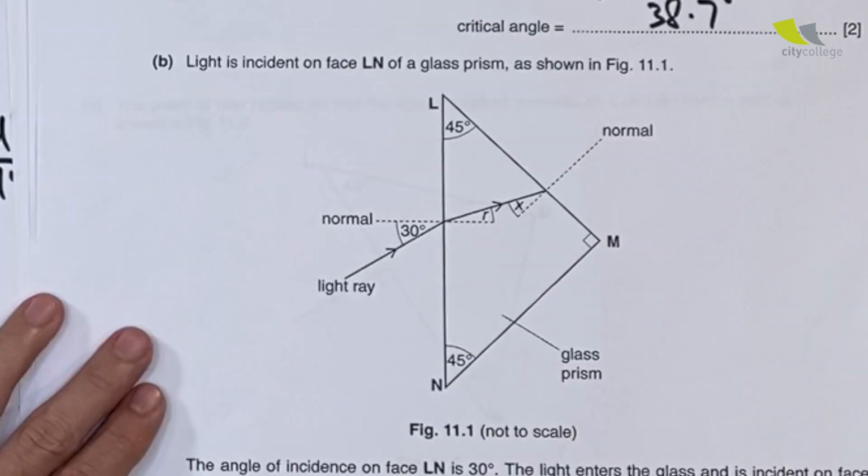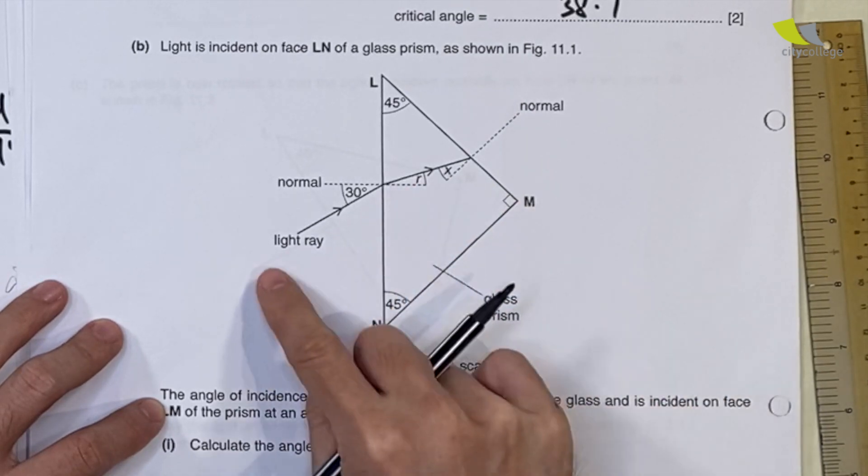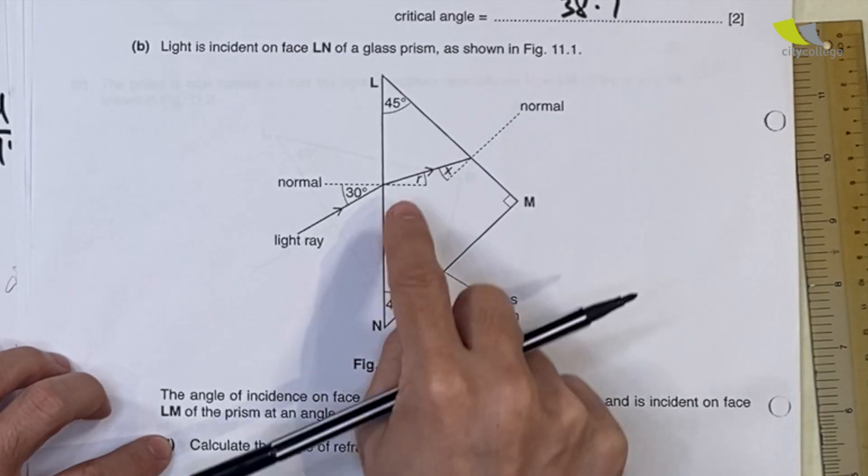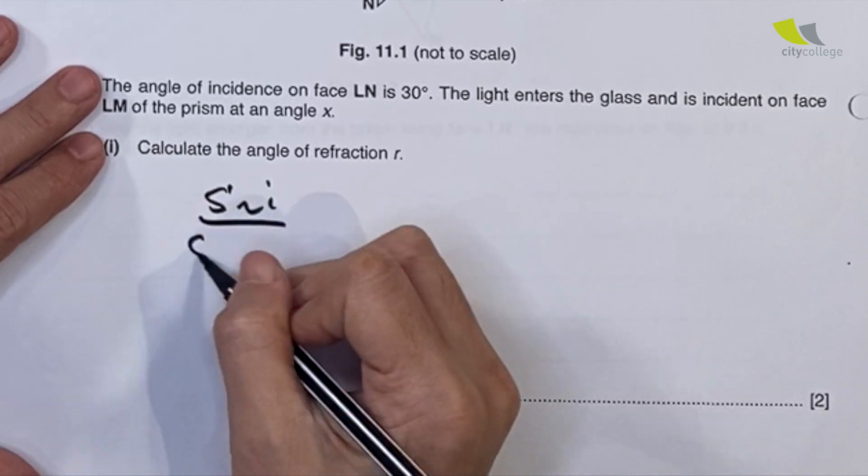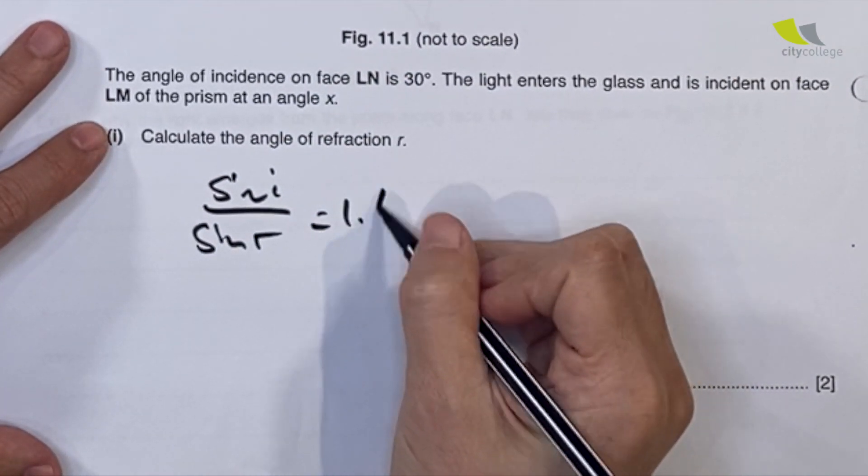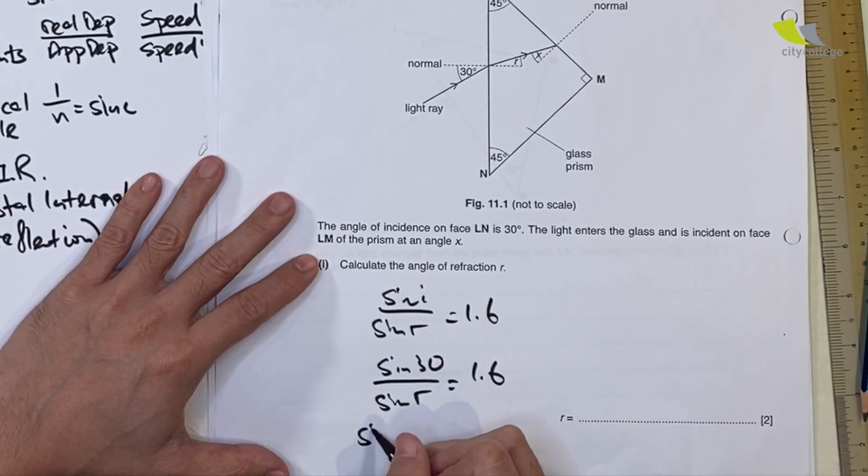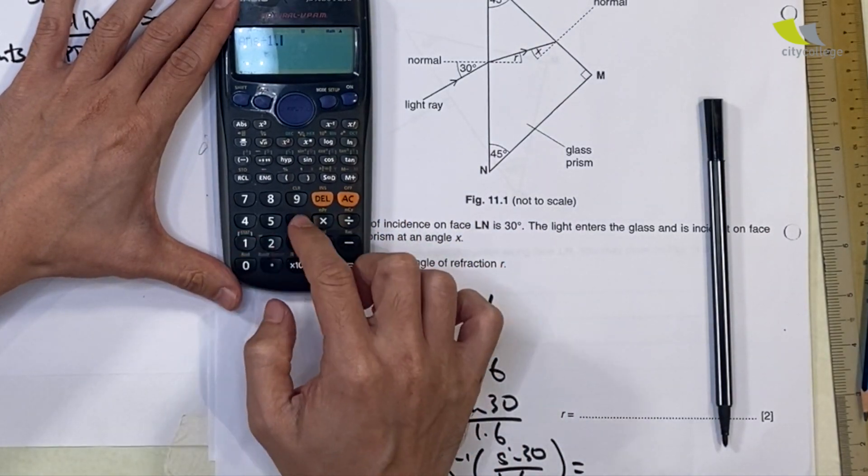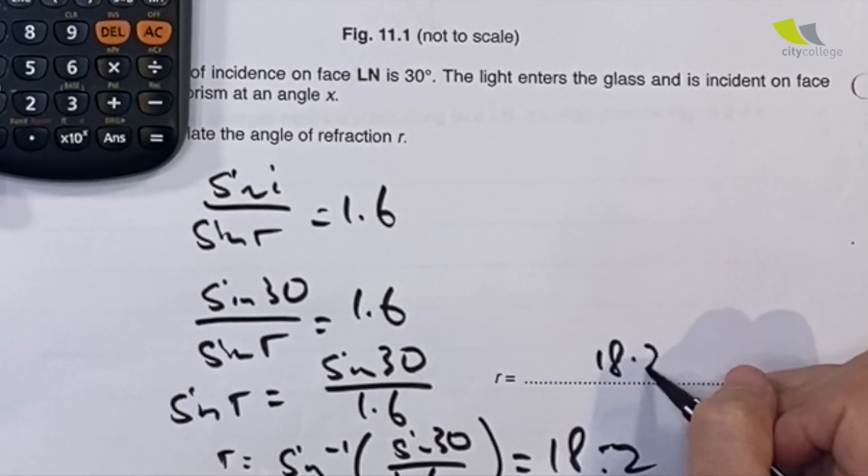Next, light is incident on phase LN of a glass prism as shown here. The angle of incidence on phase LN is 30 degrees. Light enters the glass and is incident on phase LM. Calculate the angle of refraction r. They're checking if you know how to apply sine i over sine r equals 1.6. Sine 30 over sine r is 1.6, giving 18.2 degrees.